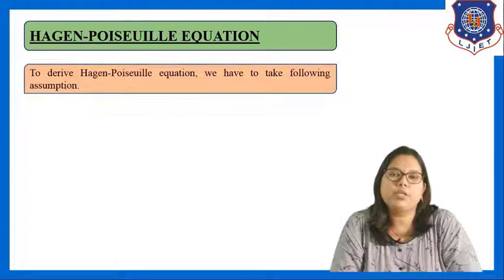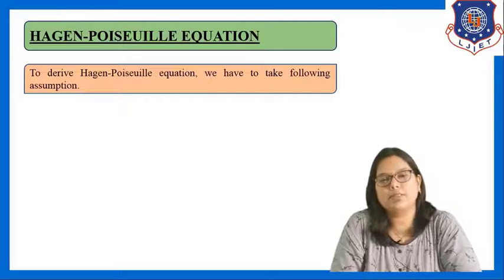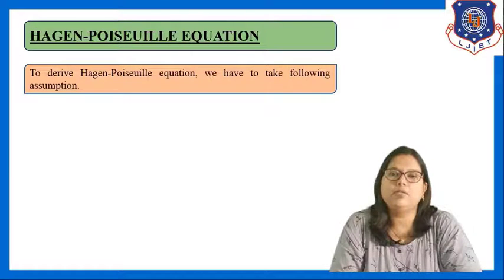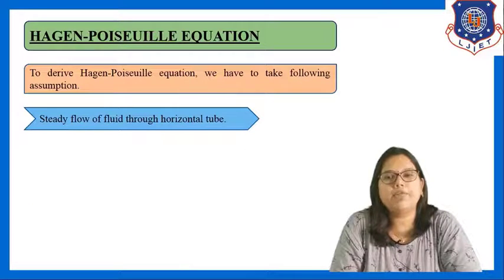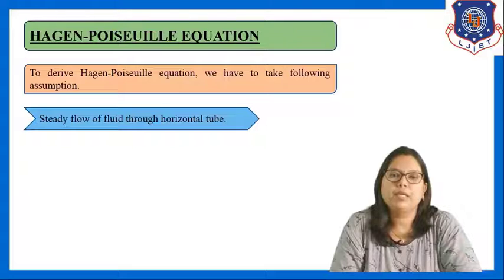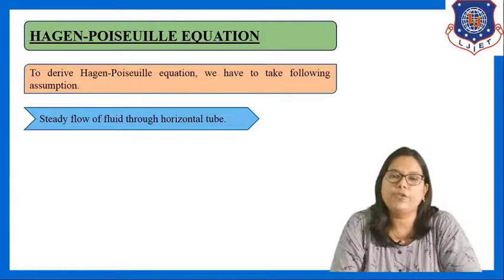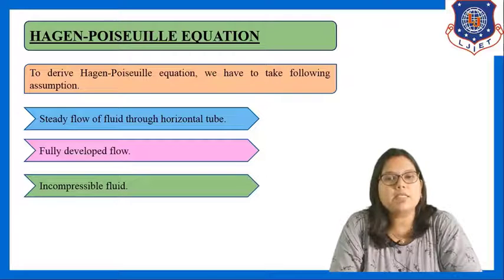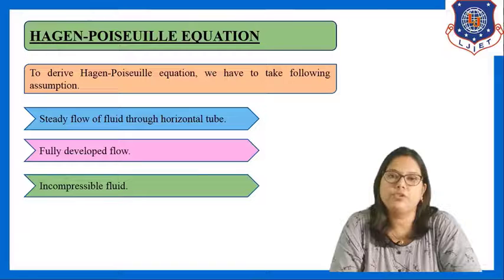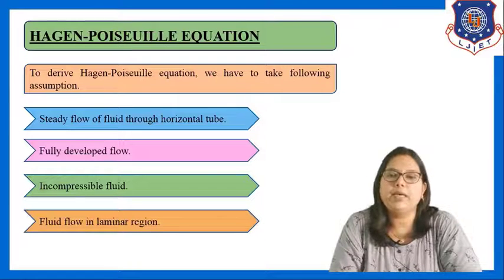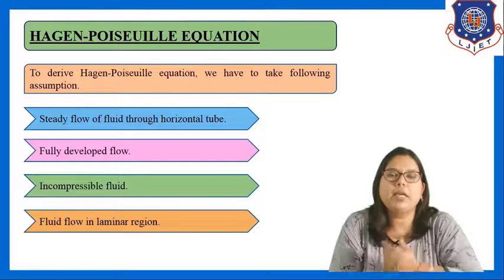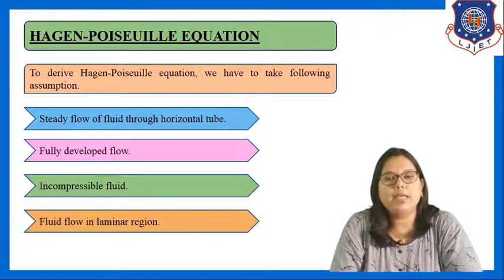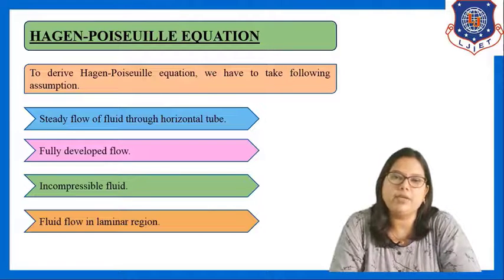To derive the Hagen-Poiseuille equation, we need to take certain assumptions. First is steady flow of fluid through a horizontal tube — the equation is derived for a horizontal tube with steady flow. Next, the flow is fully developed. Third is incompressible flow. And fourth, the fluid flows in the laminar region, which is the case for which we are deriving this equation.